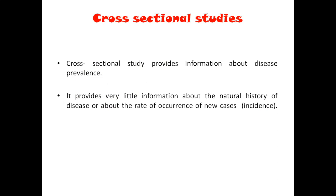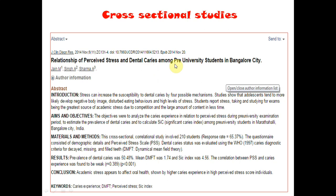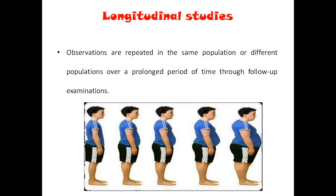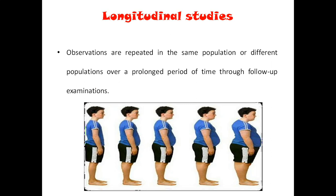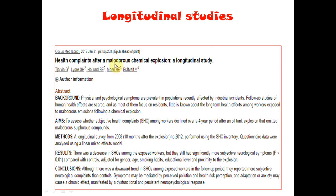An example of a cross-sectional study: the relationship of stress and dental caries among students in Bangalore city — the students will be asked about stress and their dental caries only at one point of time. In longitudinal studies, the same population will be checked at frequent intervals of time, or there will be a follow-up. For example, health complaints after a hazardous chemical explosion — a longitudinal study where the survey was from 2008 to 2012. In cross-sectional study, no follow-up; in longitudinal study, there is follow-up at T1, T2, T3, T4.